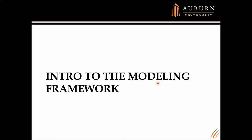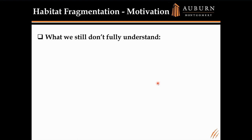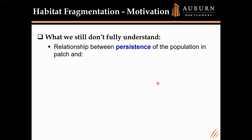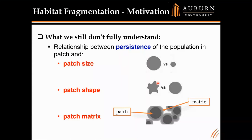We're going to use a theoretical population model to try to understand some of the mechanisms behind the DAR we see in the field. As ecologists, what we still don't fully understand is the relationship between persistence of a population in a patch and the patch size, patch shape, and patch matrix. As a mathematician, 'matrix' is an unfortunate word here — to an ecologist, the matrix is the area around a patch, not a rectangular array of numbers.